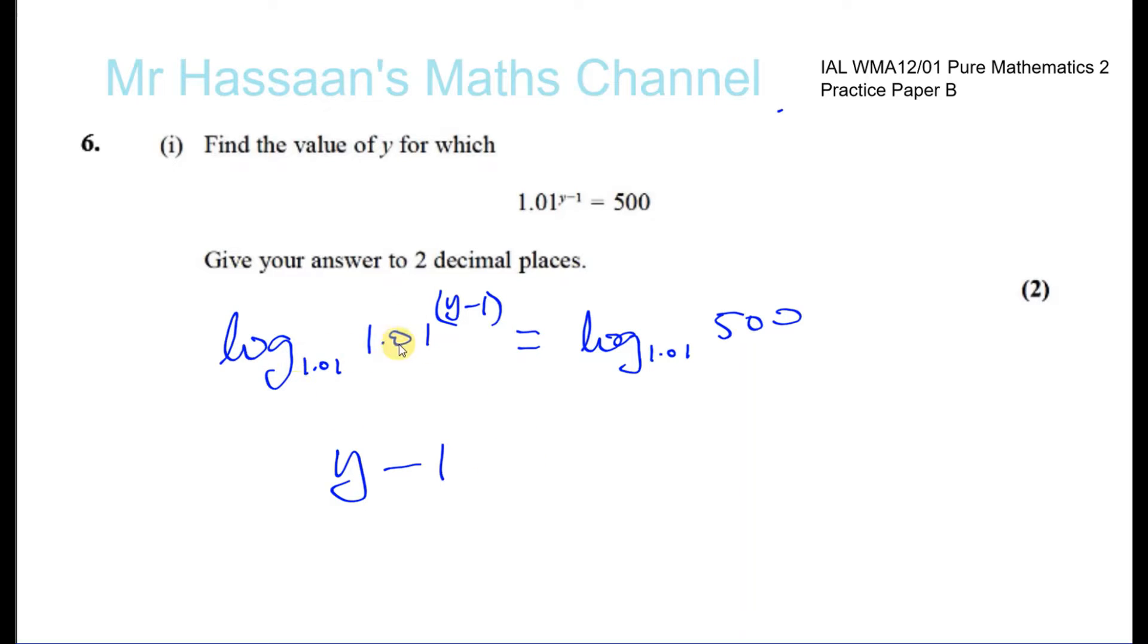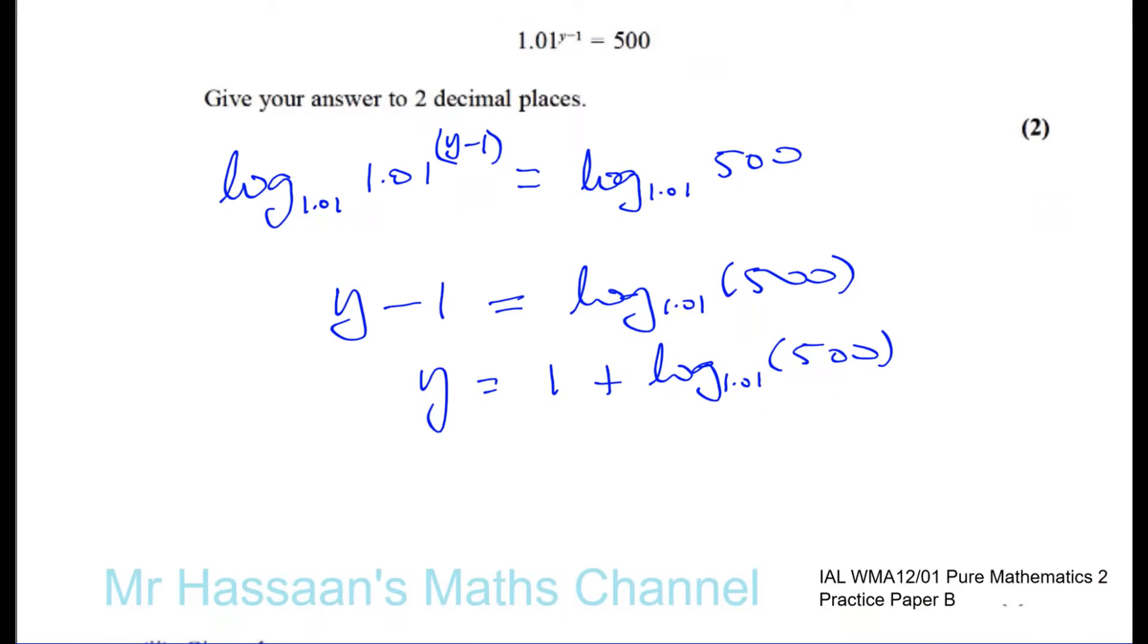So that's the reason why I did it, to get rid of that. And that's equal to log to the base of 1.01, 500. Okay, so y is going to be 1 plus log to the base of 1.01 times 500, and that will give us our answer.